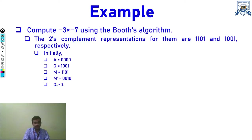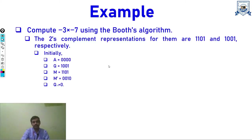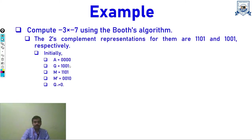Using 4-bit representation, accumulator A is initialized to 0000. Q stores the two's complement of minus 7 (the multiplier): 7 in 4 bits is 0111, the one's complement is 1000, and adding 1 gives 1001 — which is the representation of minus 7. Minus 3 is derived as 1101, since plus 3 is 0011, its one's complement is 1100, and adding 1 gives 1101.